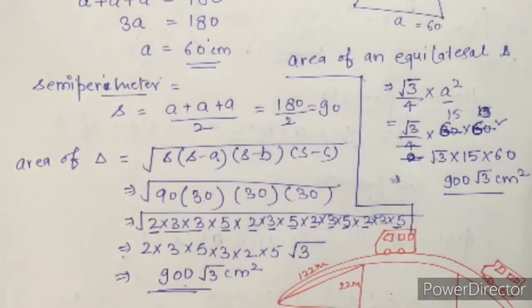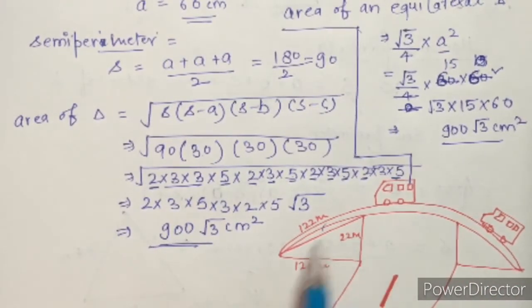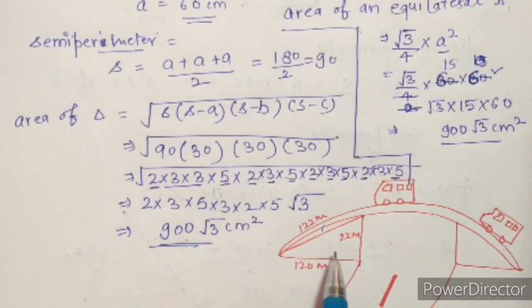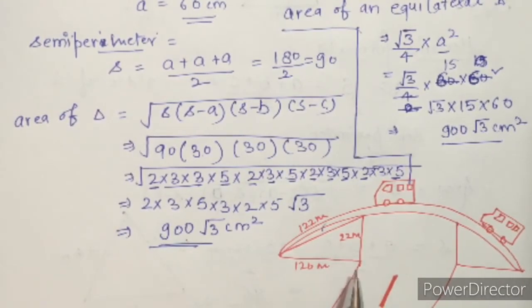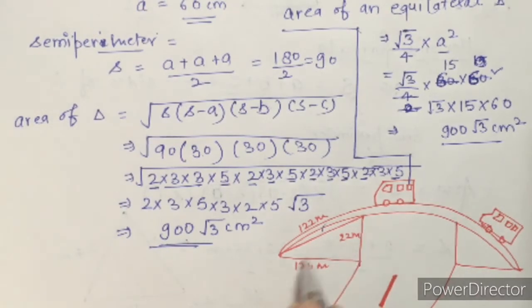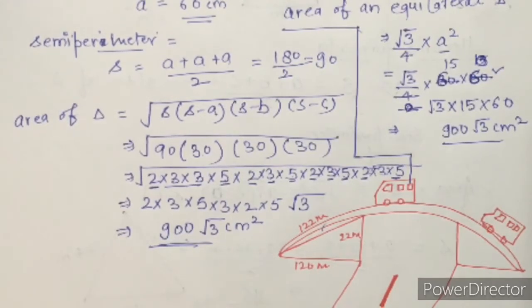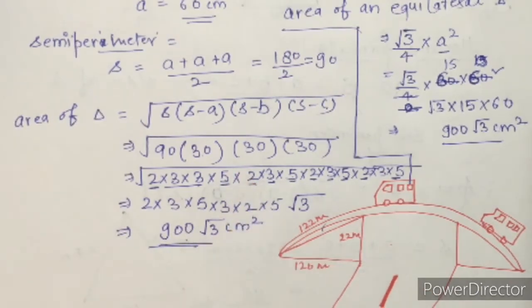Let us move to question number two. The figure shows a flyover with two sides used for advertisement purposes. Looking carefully at the figure, it is a triangle with all sides different. We will use Heron's formula. The triangular side walls of the flyover have sides 122 meters, 22 meters, and 120 meters.